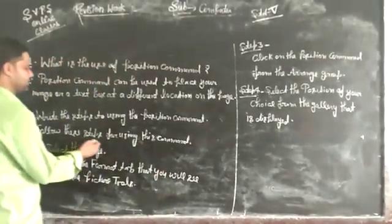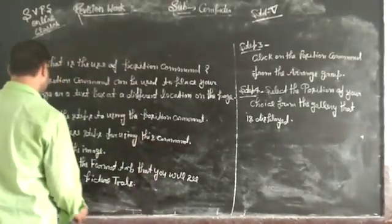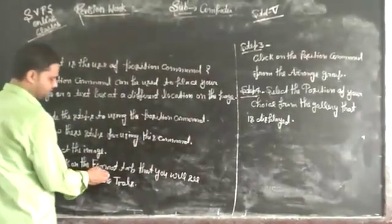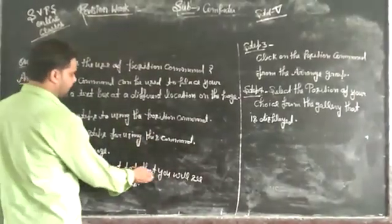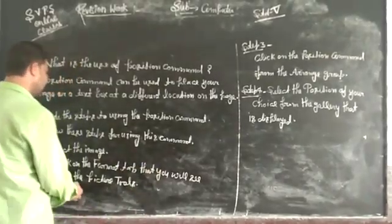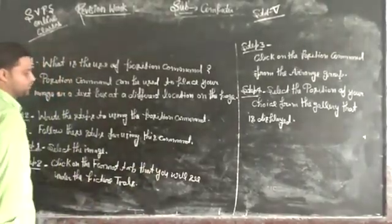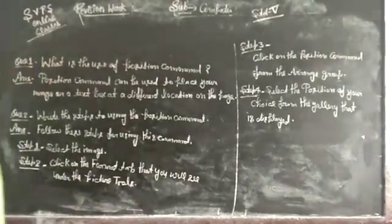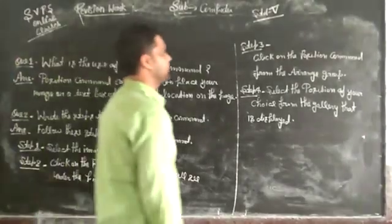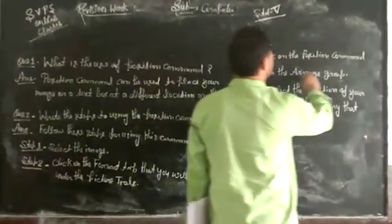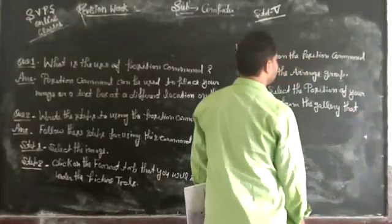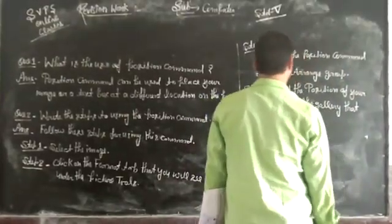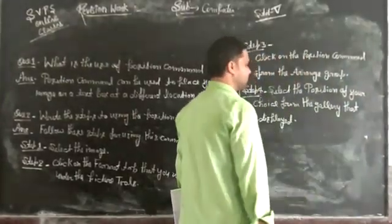Follow these steps to use this command. Select the image, then click on the Format tab that you will see under Picture Tools. Next, click on the Position command from the Arrange group. Select the position of your choice from the gallery.